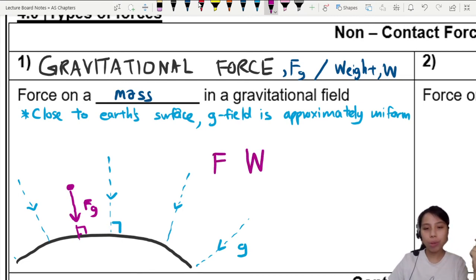So we always conclude and say that the gravitational force is the mass of the object, let's say this M, times G which is a constant near the Earth's surface only.